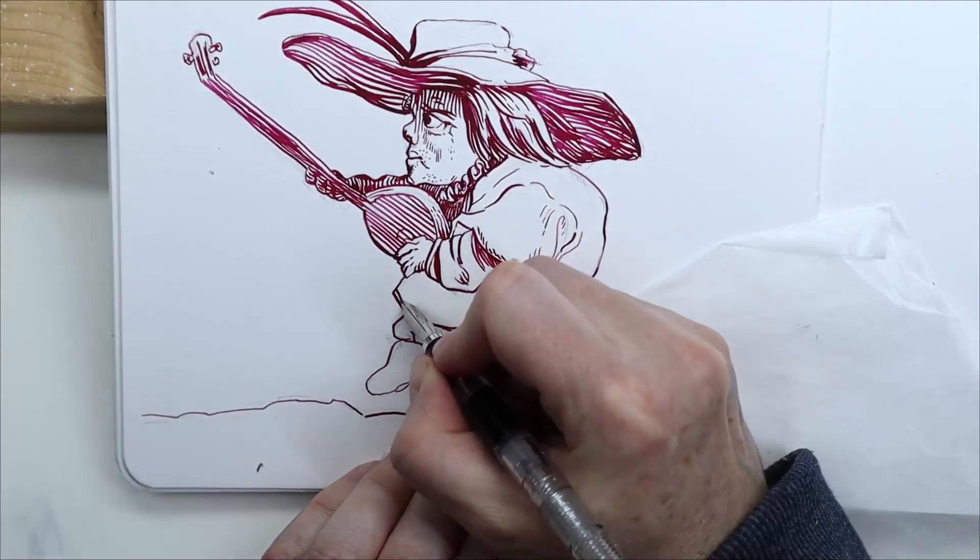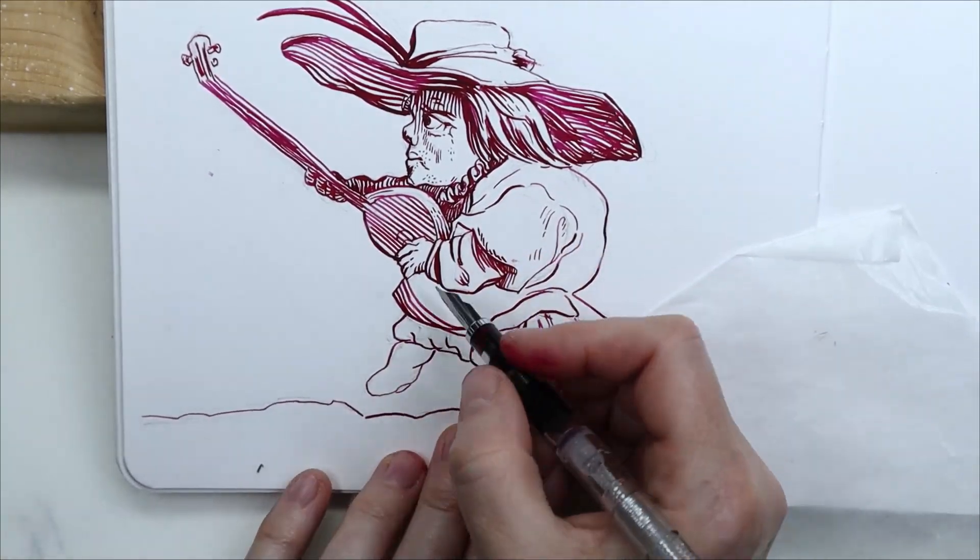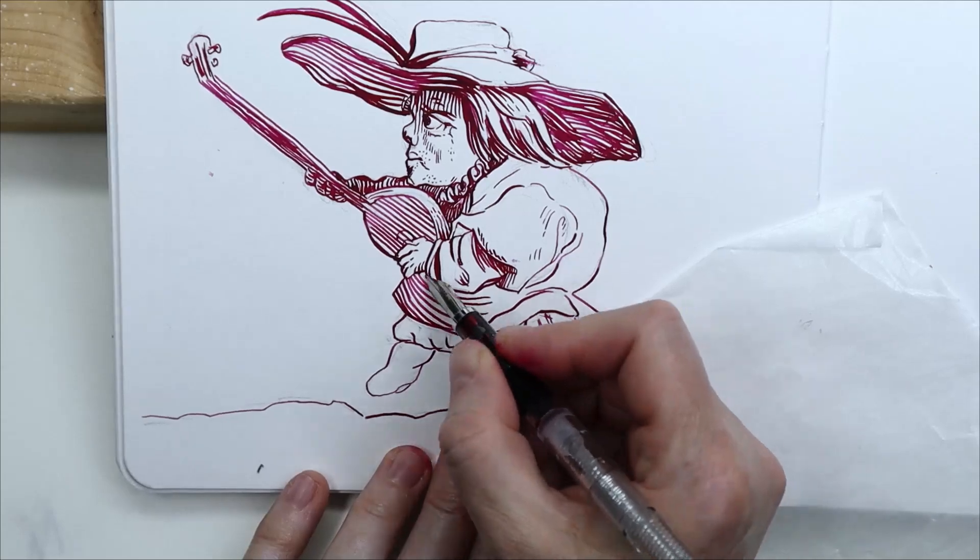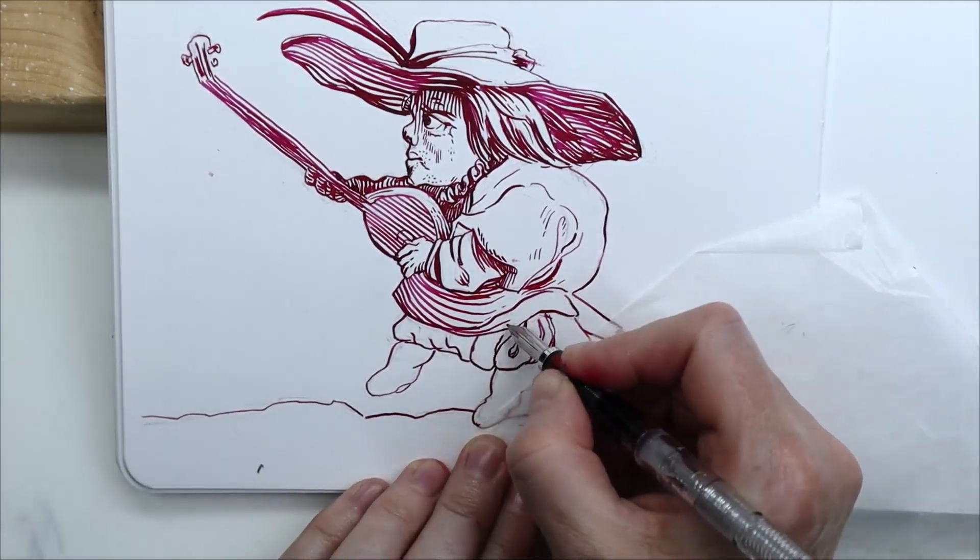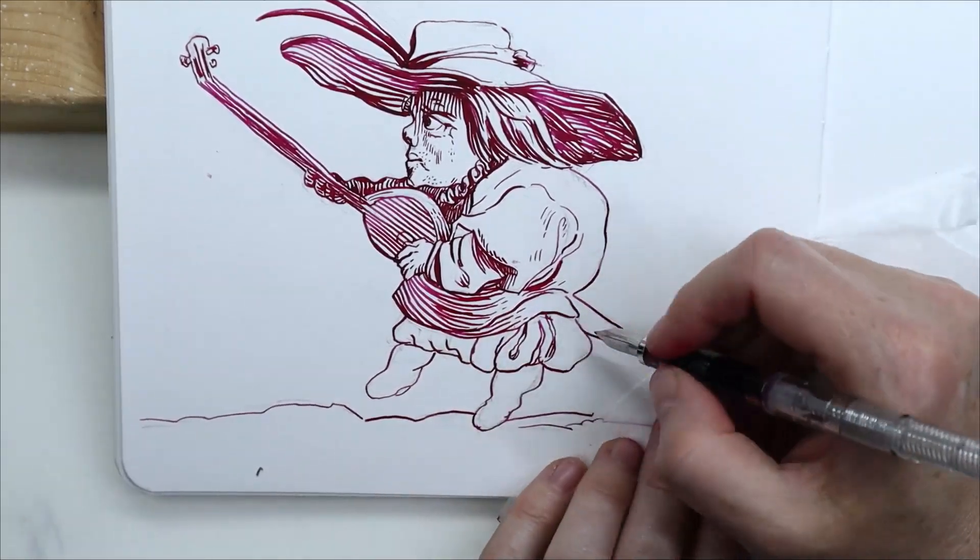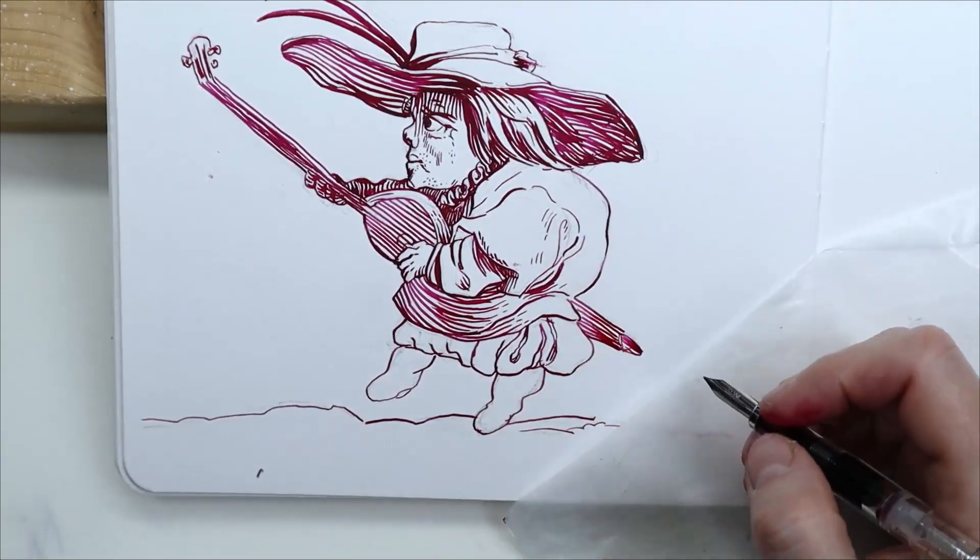This sketchbook is the Stillman and Birn Beta series. Even though it has a little texture to it, I quite like it for drawings. I used it for Inktober with all my fountain pens and it worked very well. The paper is really thick, so it's kind of nice too.